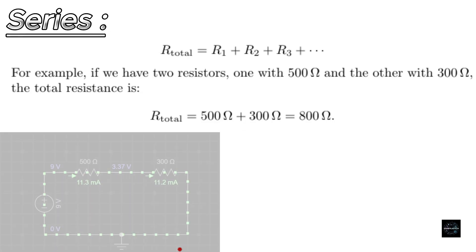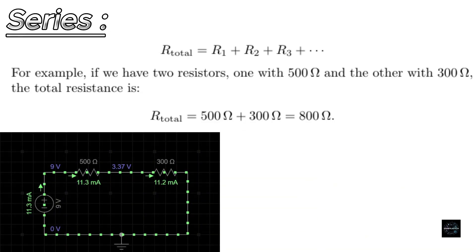For example, if we have two resistors, one with 500 ohms and the other with 300 ohms, the total resistance is 500 plus 300, which equals 800 ohms.